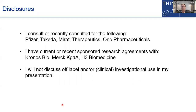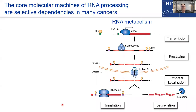These are my disclosures. Over the past decade or so, there's been some remarkable discoveries in how many cancers evolved dependencies on the core pathways of RNA metabolism shown here, where some oncogenes or other epigenetic contexts can drive really striking synthetic lethalities with the core molecular machines marked in blue that conduct each of these major steps in RNA processing.